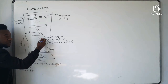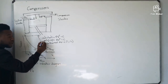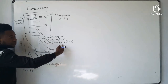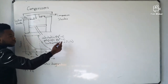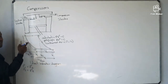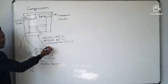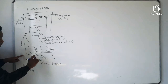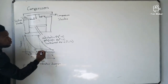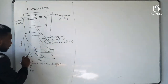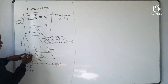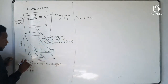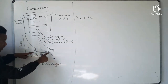On this side of the diagram is the compression side. For compression, we have three methods we can use: adiabatic, polytropic, and isothermal, whereby T1 equals T2. On the other side is the expansion side. Looking at the volumes, we have what we call the clearance volume, which is V3, meaning Vc equals V3 from this diagram.